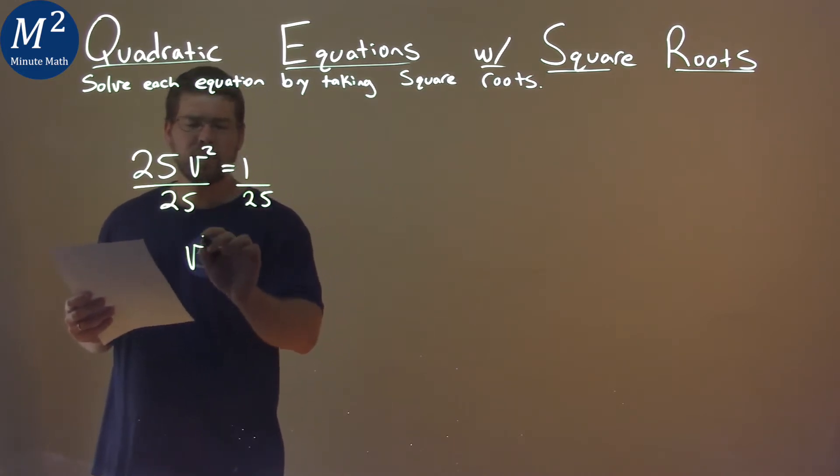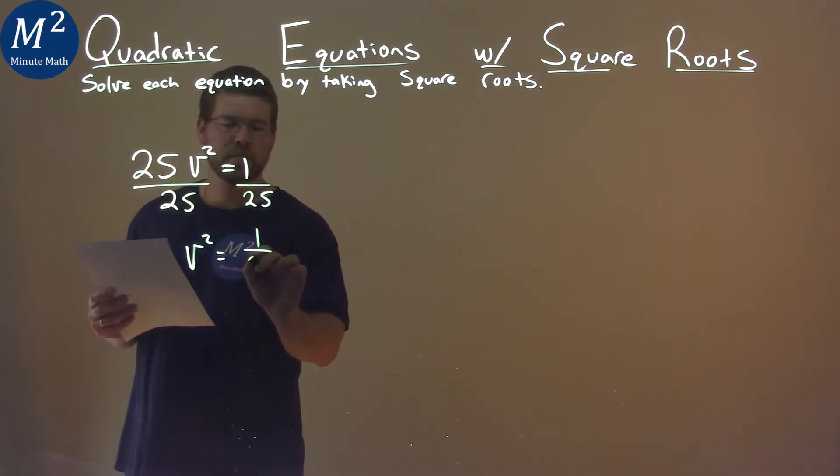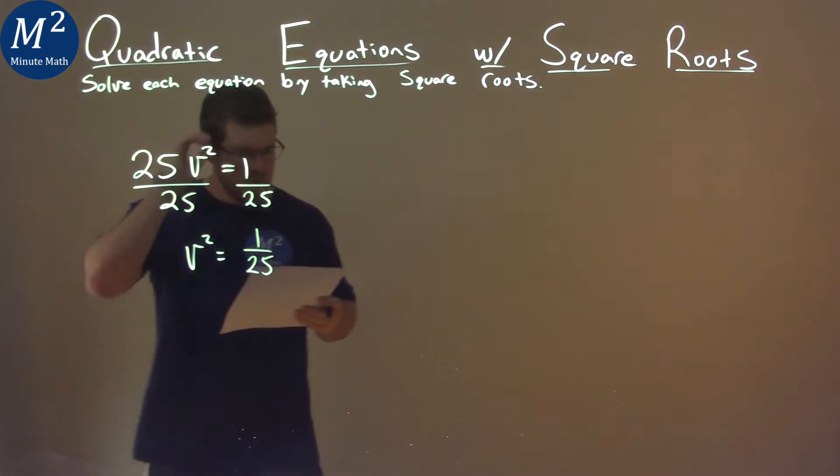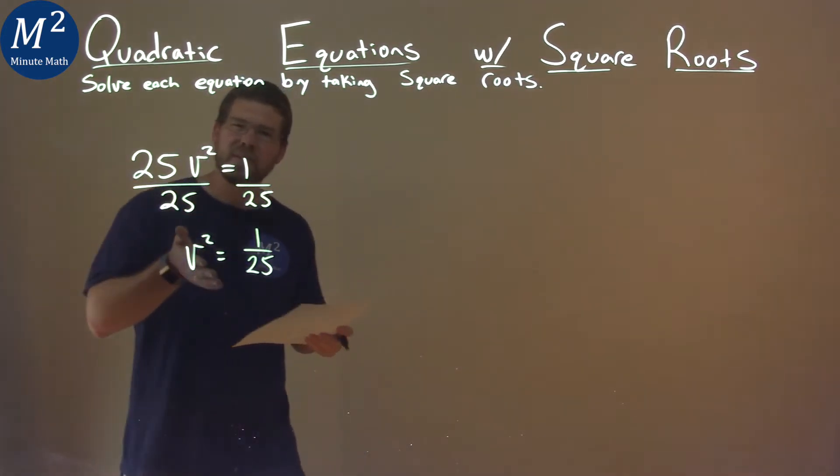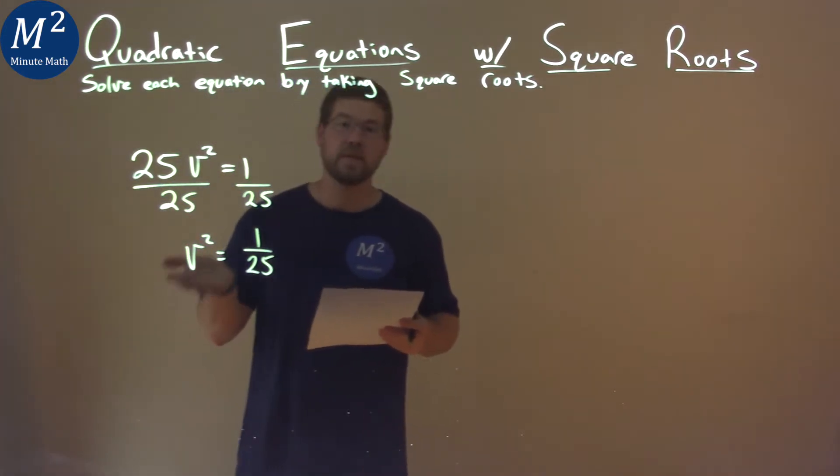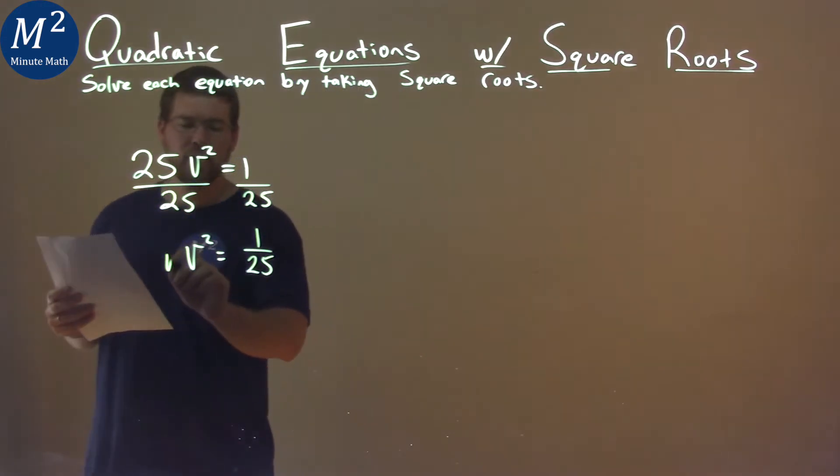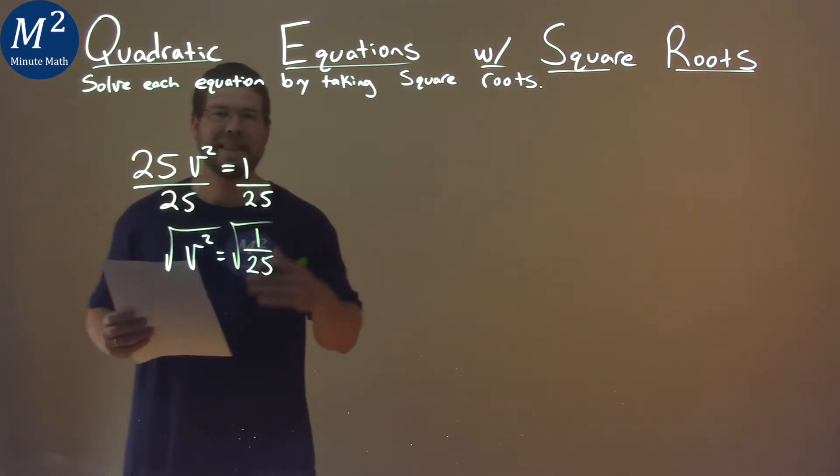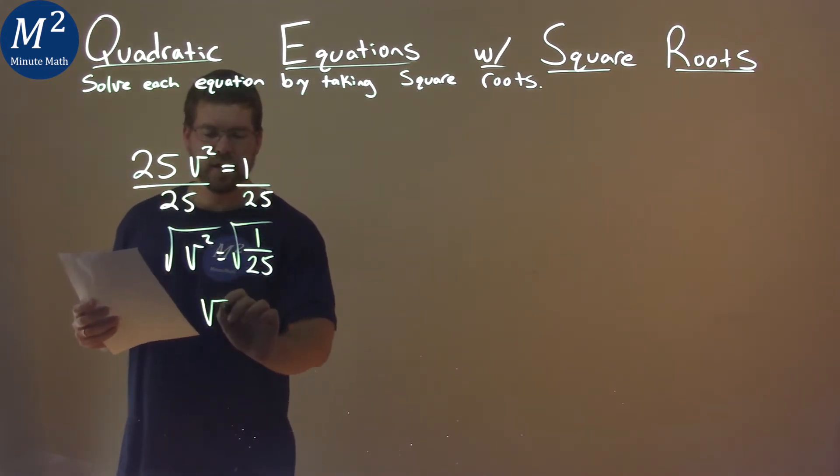I'm now left with v squared equals 1 over 25. Well, now how do we get rid of the square? We take a square root. So I take the square root of both sides of the equation. This gets me v by itself.